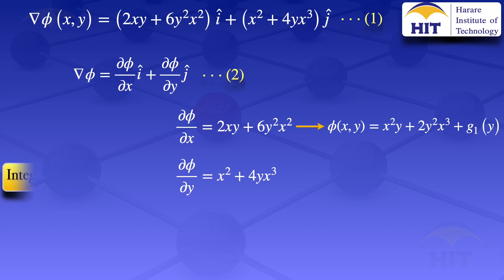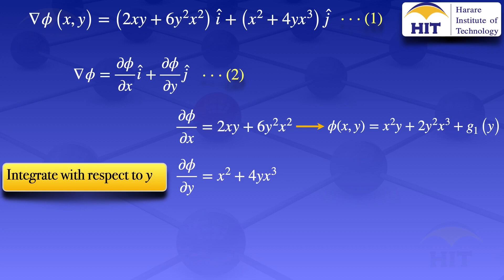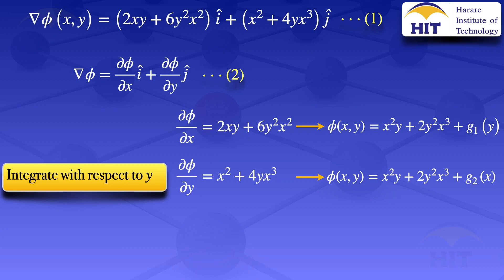We now integrate the second equation with respect to y to get φ. When integrating x² with respect to y, we treat x as a constant, giving x²y. The integral of 4yx³ with respect to y gives 2y²x³. So φ(x,y) = x²y + 2y²x³ + g₂(x), where g₂(x) is the constant of integration — a function of x, since we treated x as a constant.